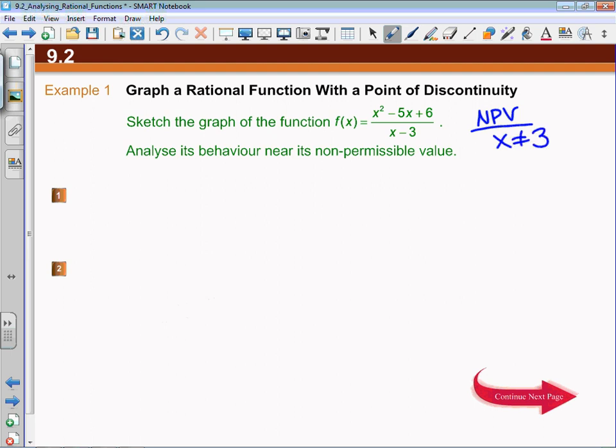What I would recommend is that as soon as you see that it's rational, make sure it's in factored form. The first thing I'm going to do is factor the quadratic in the numerator and rewrite it as (x-3)(x-2).